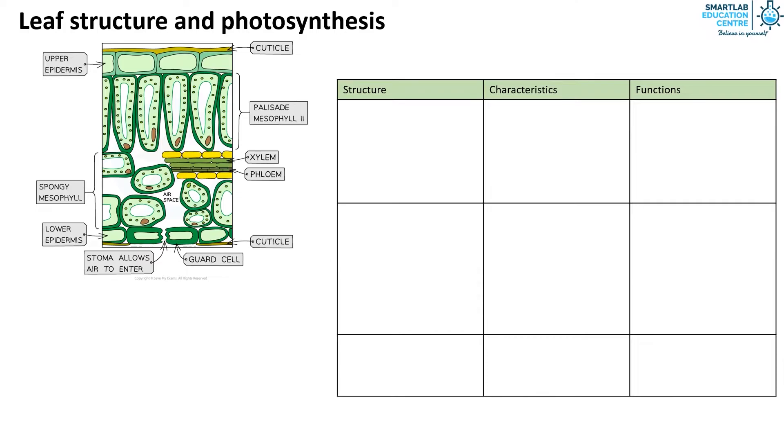Next, we have the vascular bundle. It contains the xylem and phloem. The xylem transports water and mineral salts from the roots to all other parts of the plant. The phloem transports food made by the leaves to other parts of the plant. We will study this in greater detail in the subsequent video.